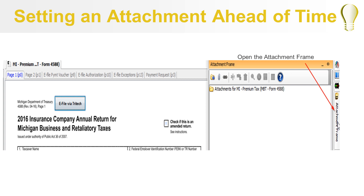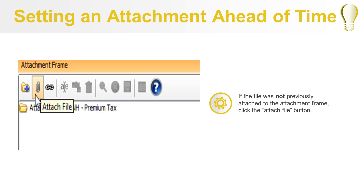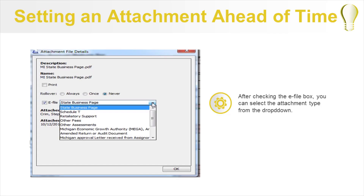If the attachment is already attached to your attachment frame, select the file in the attachment frame and click the File Details button, or right-click on the file in the attachment frame and select File Details. In the Attachment File Details dialog, check the eFile box. When you do this, the drop-down box that contains the possible eFile types will be enabled so you can choose the applicable type.